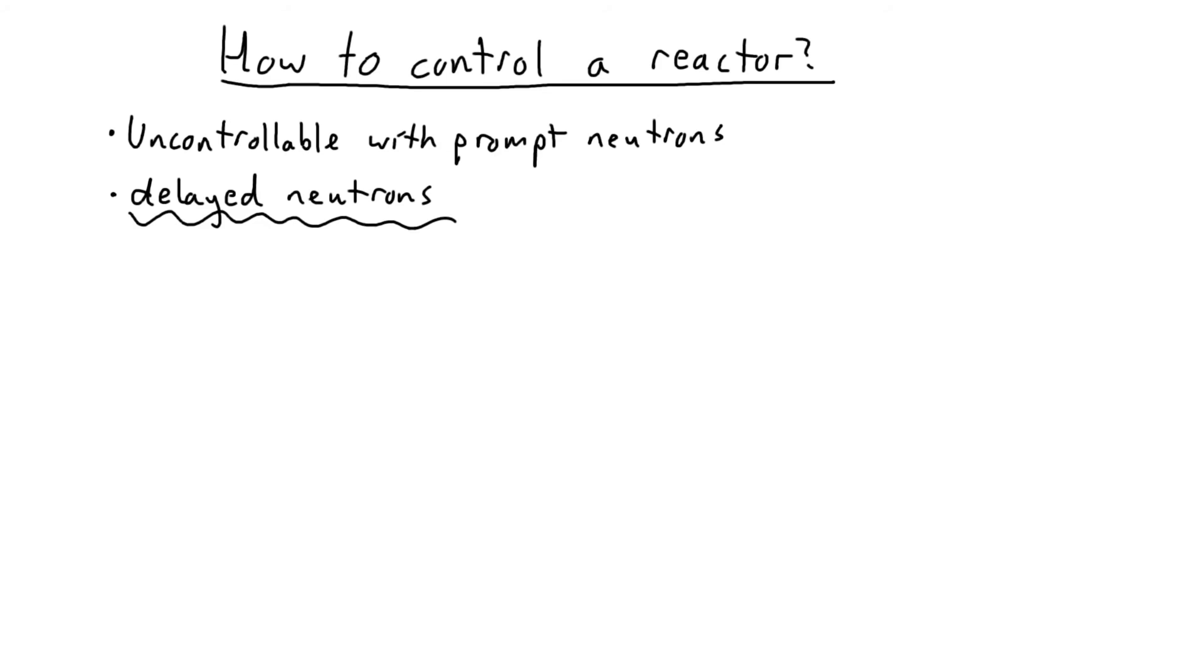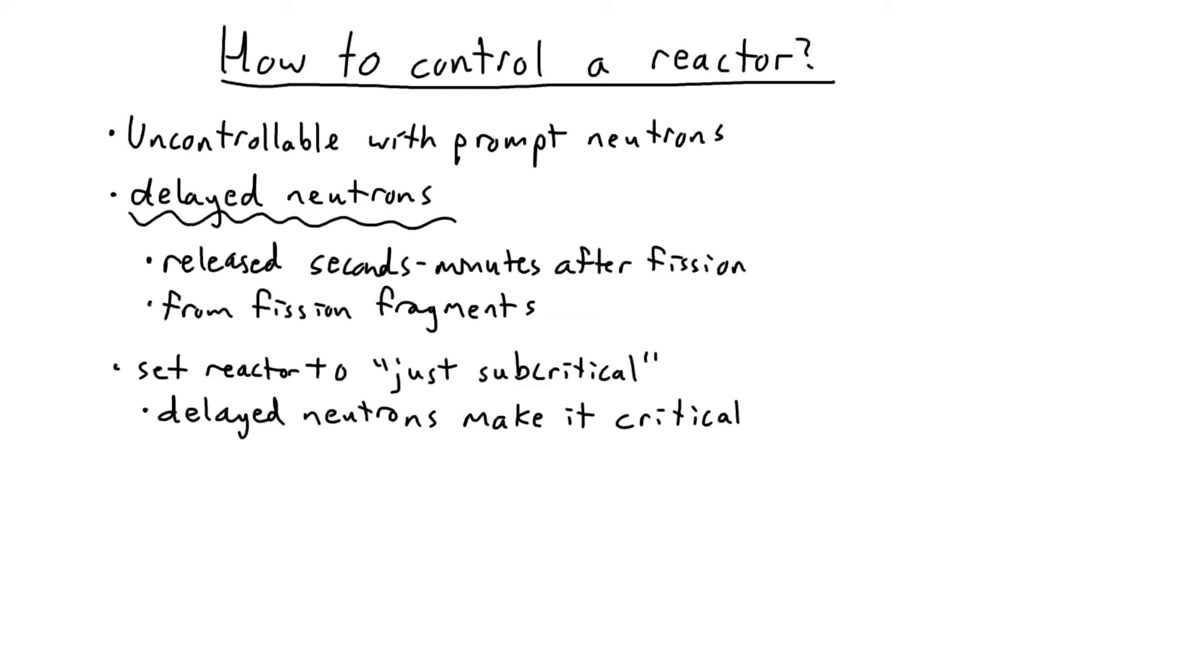Delayed neutrons are released a few seconds to a few minutes after a fission, and they come from the excited fission products, that is, the smaller atoms left over, after an atom fissions. Do note, though, that there are not nearly as many delayed neutrons as there are prompt neutrons. To take advantage of delayed neutrons, the reactor is set just subcritical with respect to prompt neutrons, with the knowledge and expectation that delayed neutrons will come and will bring the system to critical as they are emitted slowly over time.